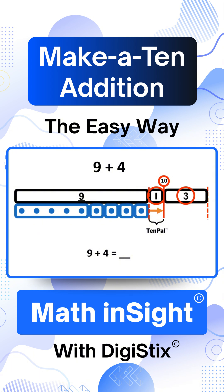So, we decompose 4 into 1 and 3. We show 1, the 10-pal, like this. The second part of 4 is 3. It's the number over 10. We show it like this.